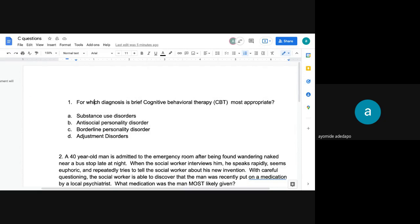So the first question is, which diagnosis is brief cognitive behavioral therapy, so CBT, most appropriate? So brief cognitive behavioral therapy is usually four to eight weeks, and regular CBT is usually 12 to 20. So with that being said, which one of these four diagnoses would be most appropriate in treating?